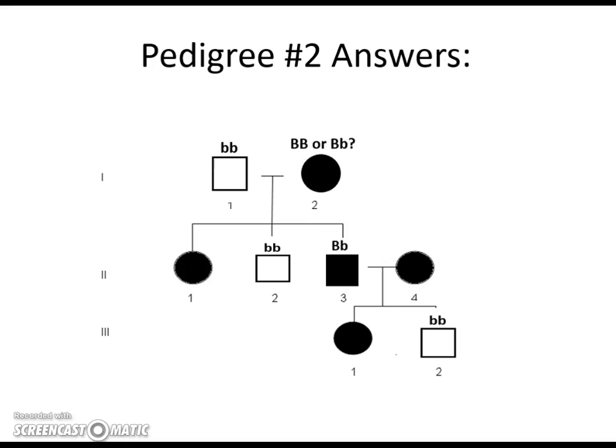Let's start with individual I-2 — let's call her grandma. Grandma could be homozygous dominant or heterozygous. In order to figure out what grandma is, we don't have her parents to go off of, so we have to look at her offspring. Notice her son individual II-2 is not affected — this means he had to get half of his DNA from mom and half from dad. Since dad can only contribute a lowercase b, grandma must be heterozygous. That would also make individuals II-1 and II-3 heterozygous, since they received half from mom and half from dad.